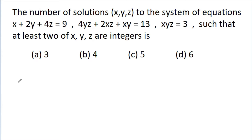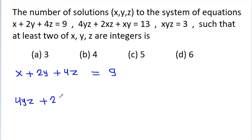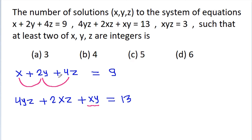The first equation is x plus 2y plus 4z is equal to 9. The second equation is 4yz plus 2xz plus xy is equal to 13. Notice that x times 2y is 2xy, and here we have xy; and 2y times 4z is 8yz, and here we have 4yz; and x times 4z is 4xz, and here we have 2xz.